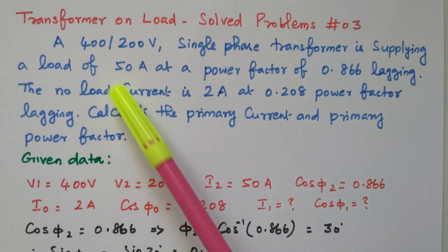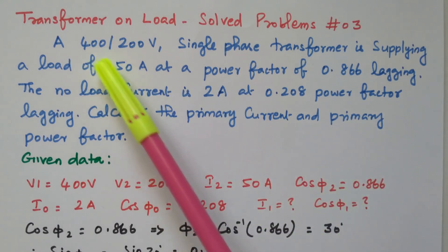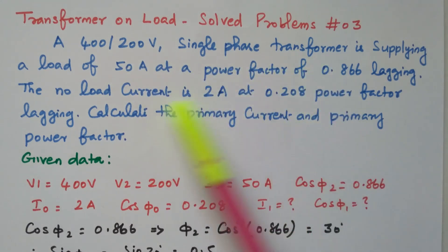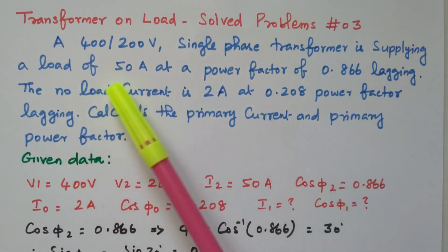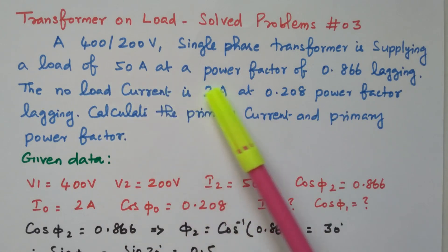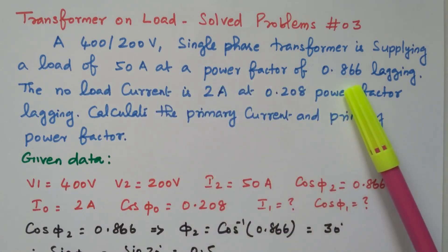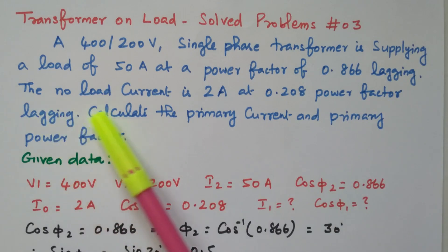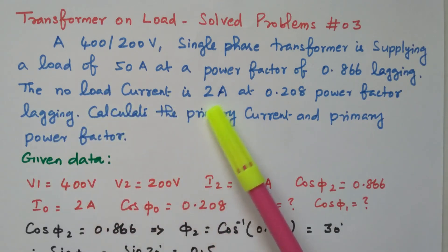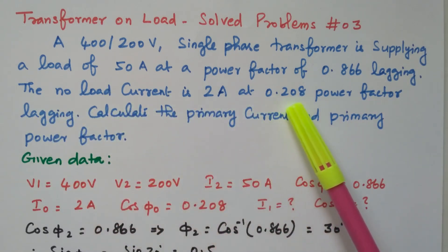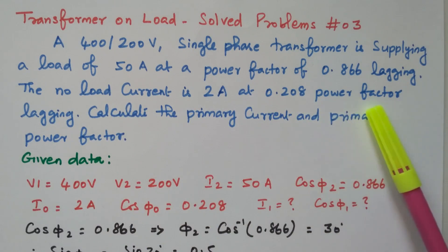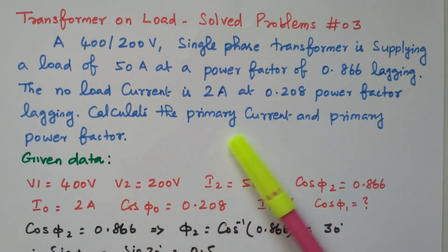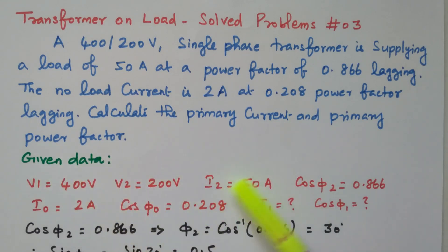Now we will go to the problem. A 400/200 voltage single phase transformer is supplying a load of 50 ampere at a power factor of 0.866 lagging. The no load current is 2 ampere at 0.208 power factor lagging. Calculate the primary current and primary power factor.